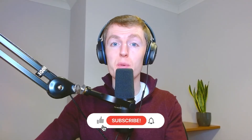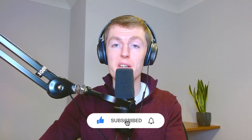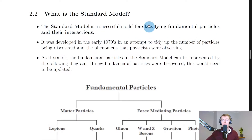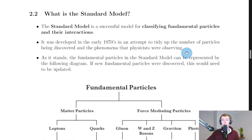In this video we're going to look at the standard model. The standard model is a successful model for classifying fundamental particles and their interactions — classifying just means sorting into categories. It was developed in the early 1970s in an attempt to tidy up the number of particles being discovered and the phenomena that physicists were observing.